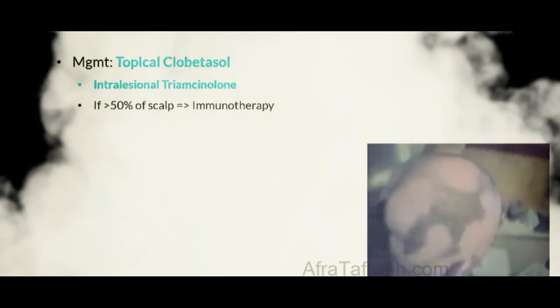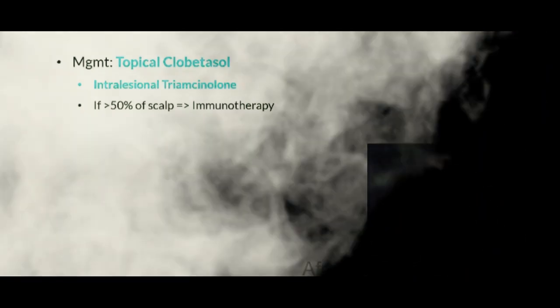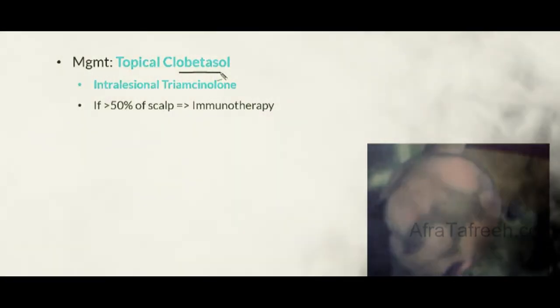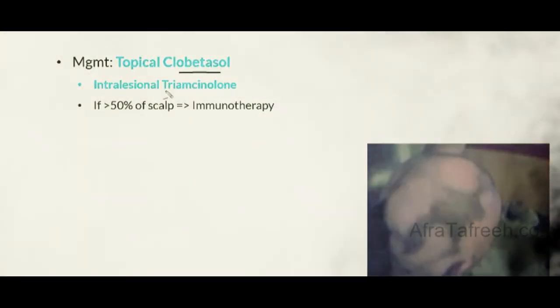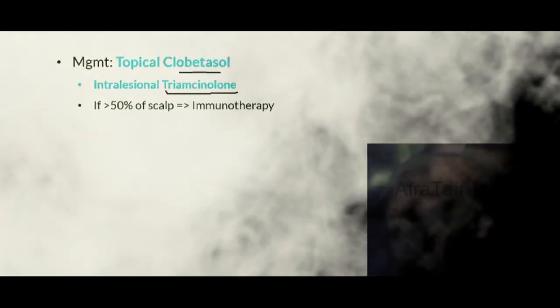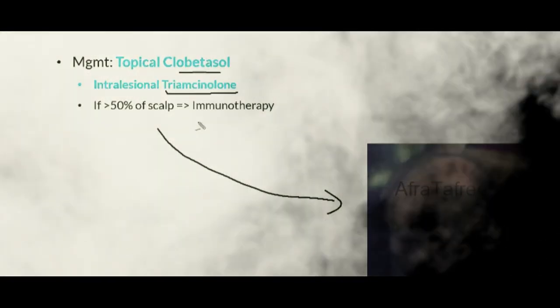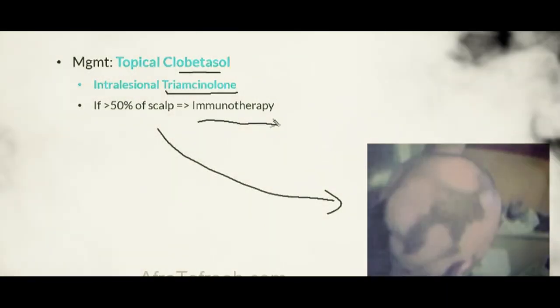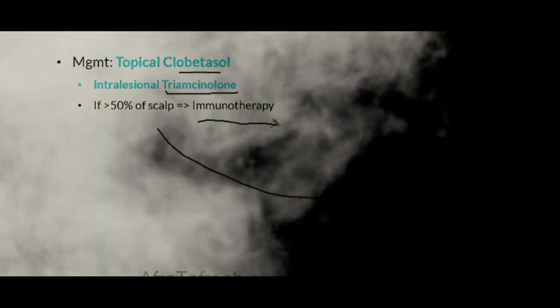In managing patients with alopecia areata, corticosteroids are first-line therapy. Patients with more limited disease can get significant benefit from topical clobetasol, a high-potency corticosteroid. We can then progress to intralesional triamcinolone injections. For patients with greater than 50% of their scalp involved, we can proceed with immunotherapy, including agents such as methotrexate or mycophenolate, which suppress the immune system and decrease the immune-mediated destruction seen in alopecia areata.